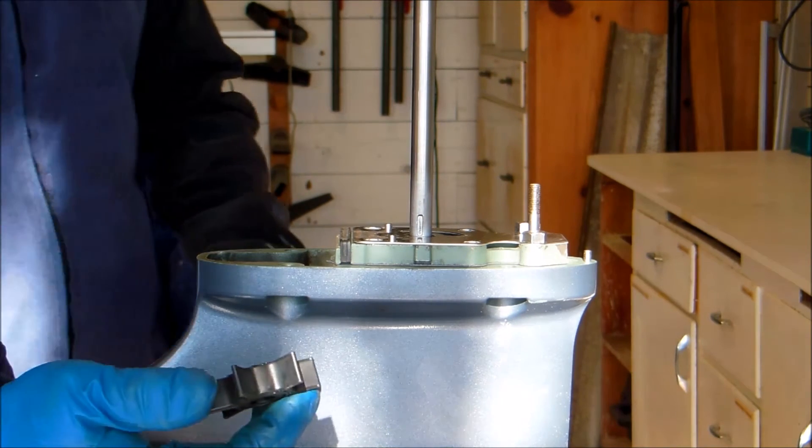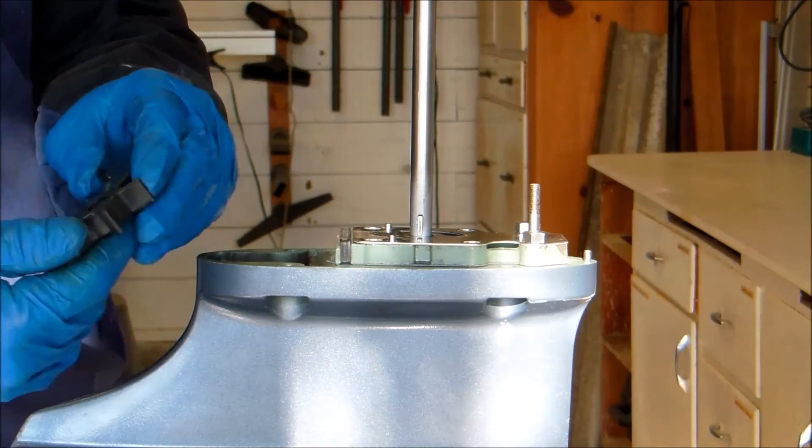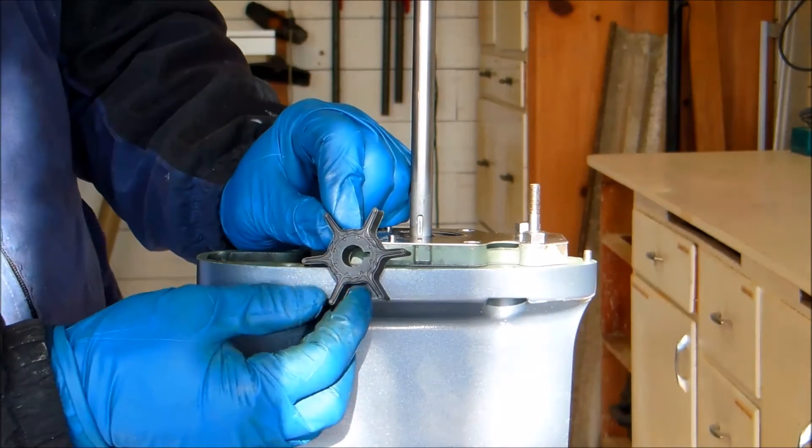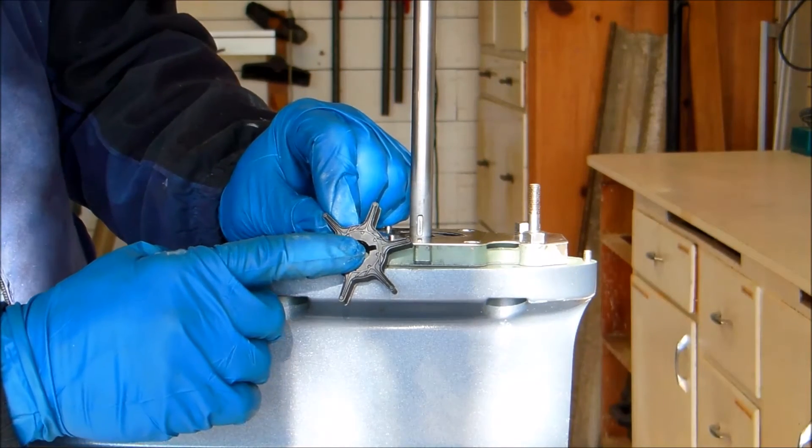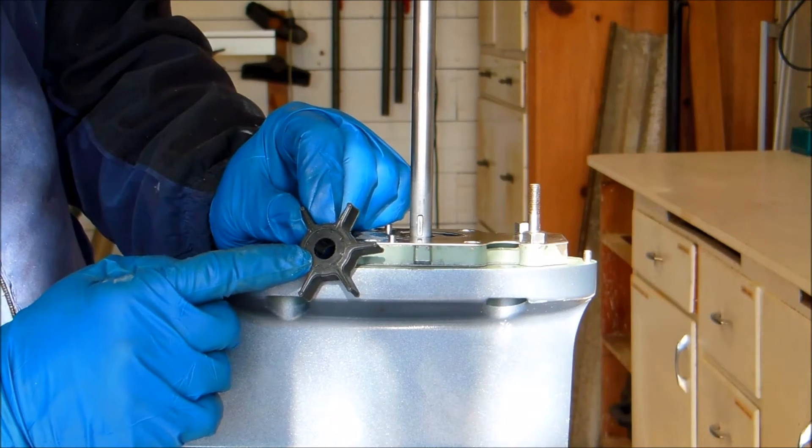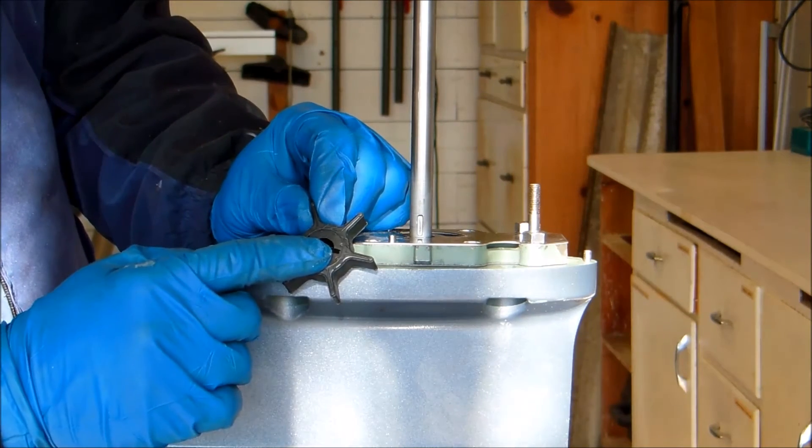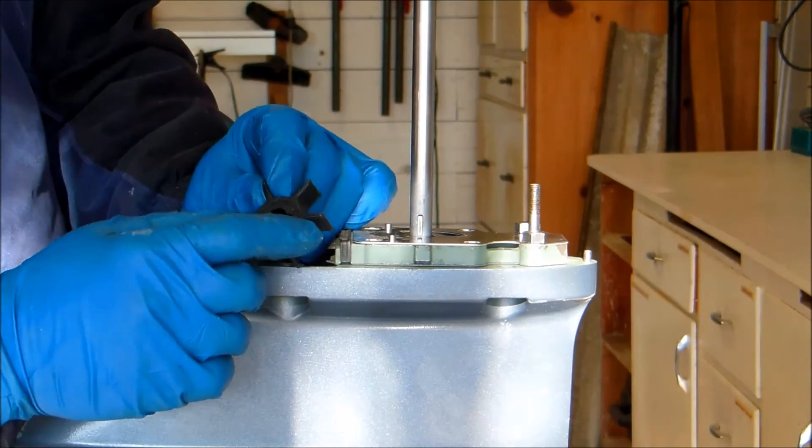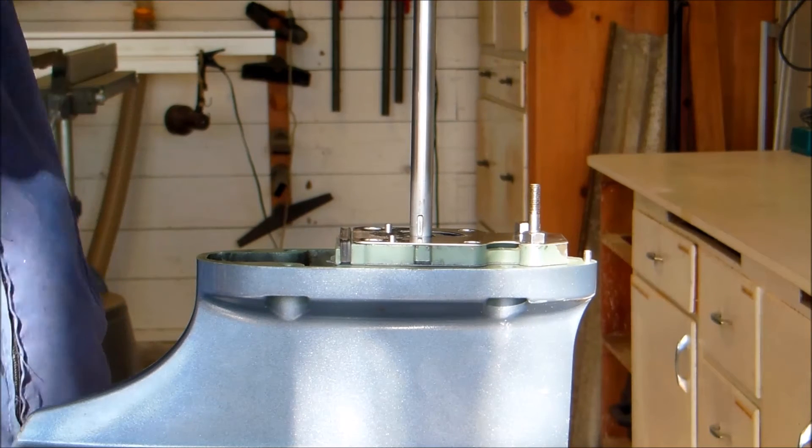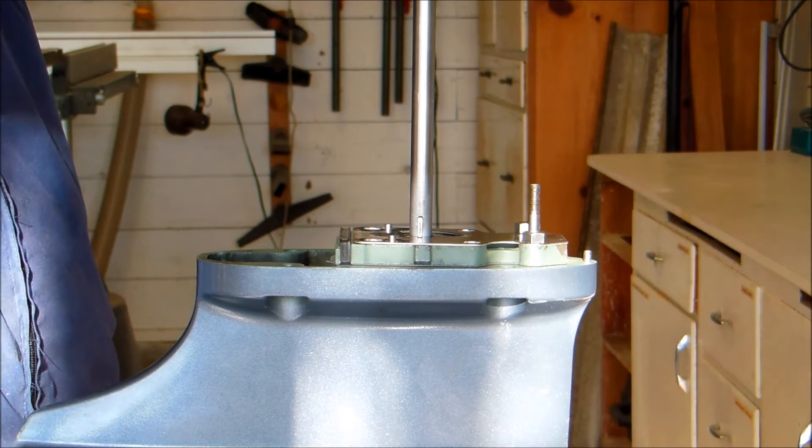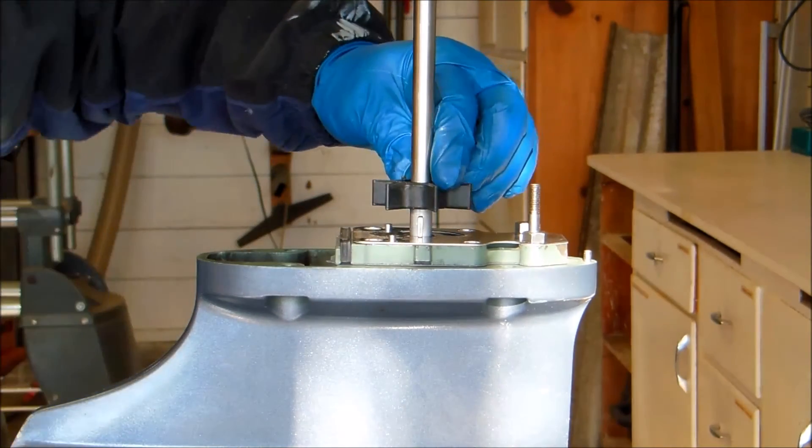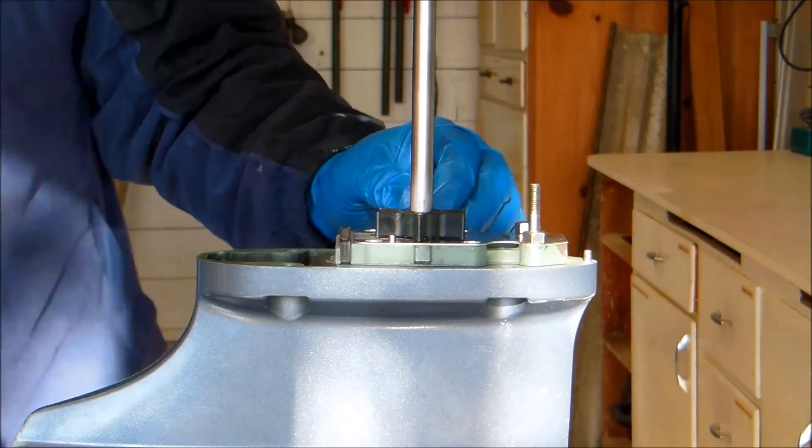Next step is the new impeller itself. It sits on this keyway. And now, if you look carefully, you can see there's a keyway in one side of the impeller and none on the other. So that shows you which side of the impeller goes down. The side with the notch in this case goes down. It's over the Woodruff key. Just like that.